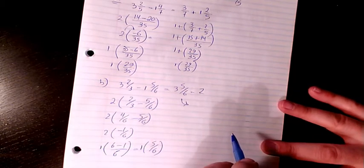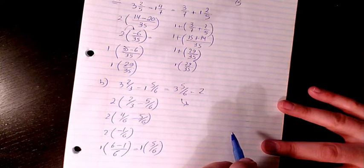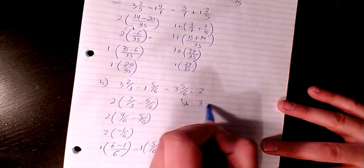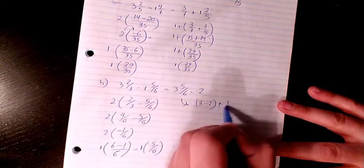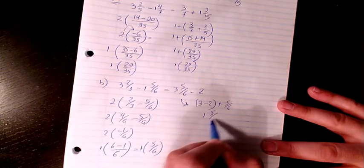Here we have three minus two plus five over six, so it will be one and five over six.